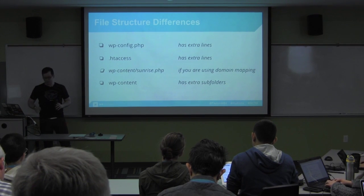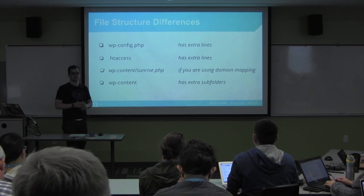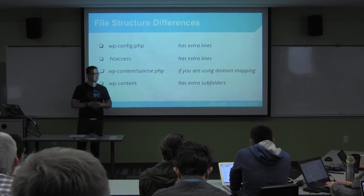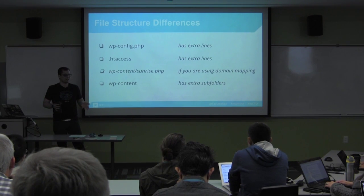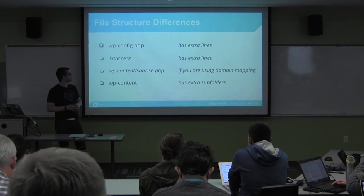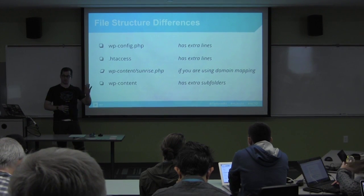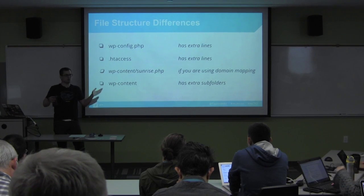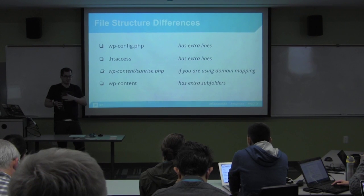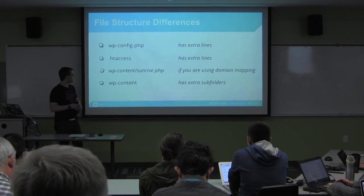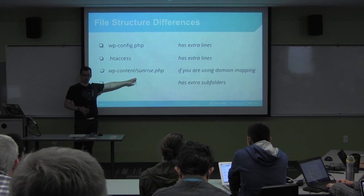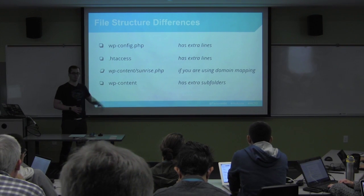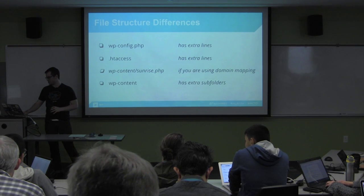Let's look at file structure differences. If you have a normal WordPress installation, you already have all the code for Multisite — it's the same WordPress. You just change a couple of lines in your wp-config, add a couple of lines to your .htaccess (which WordPress generates for you), and you've got a Multisite network. Same core, one installation of WordPress. If you're using domain mapping, use Mercator because it's better than sunrise.php, and your wp-content will have some different subfolders.